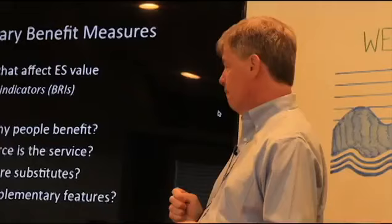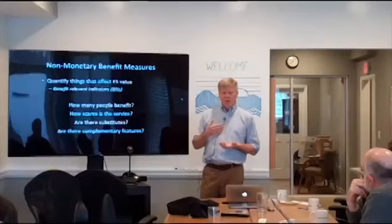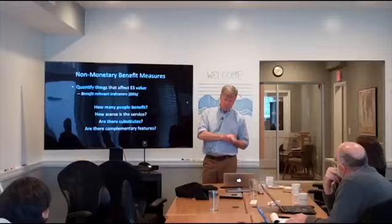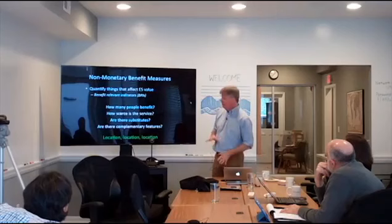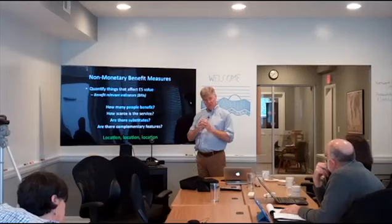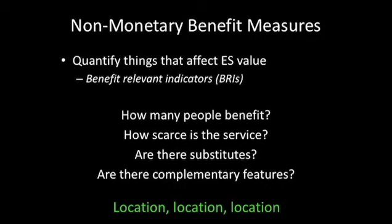And then, are there complementary features present? An example of this would be, if you're talking about the recreationally valuable trout, are they in a place that anyone has access to? Can we actually quantify access, and things like that? What this is all about is basically where you are in the landscape. The reason Lisa and I have been working together for 20 years is that we connected when she was a leader on GIS analysis. We started doing this kind of spatial counting.